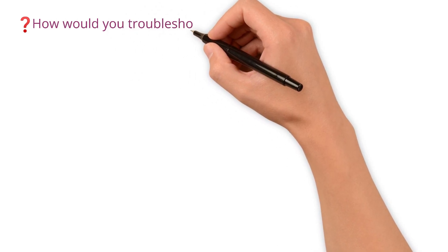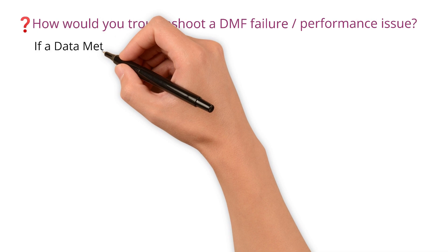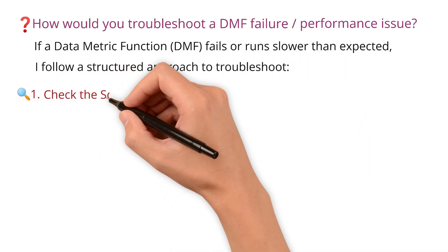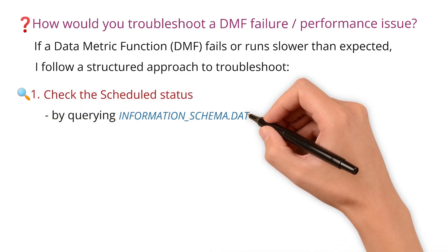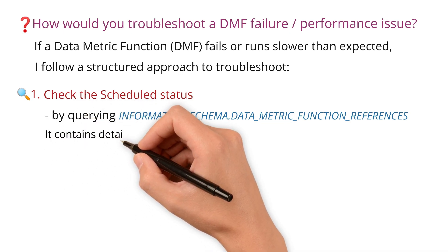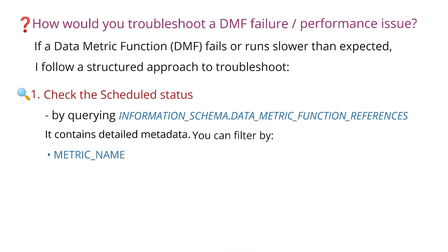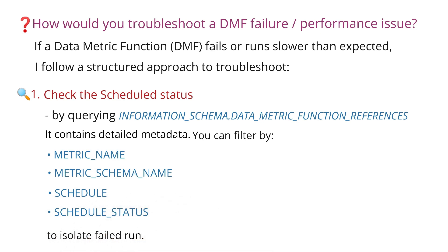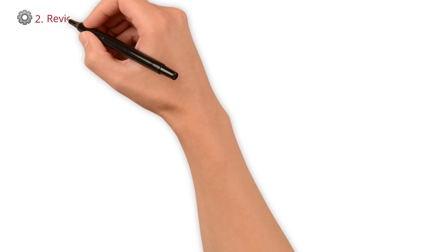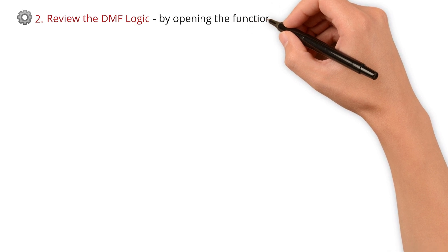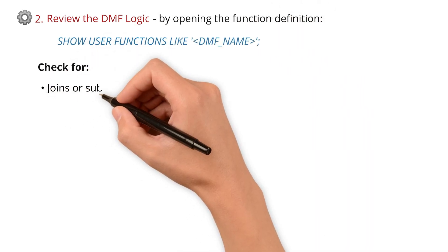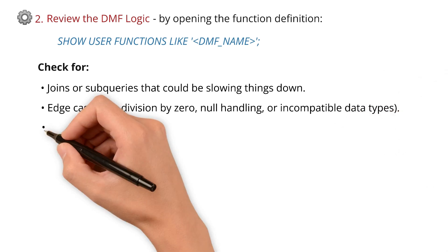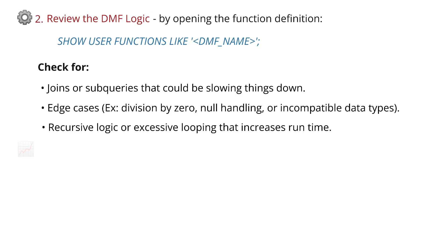How would you troubleshoot a DMF failure or a performance issue? If a data metric function fails or runs slower than expected, I follow a structured approach. Step one: check the scheduled status by querying the information schema table Data Metric Function References — it contains detailed metadata and you can filter by metric name, metric schema name, schedule, and schedule status to isolate the failed run. Step two: review the DMF logic — if it's a custom DMF, check for joins or subqueries that could be slowing things down, edge cases like division by zero, null handling, incompatible data types, or recursive logic that increases runtime.